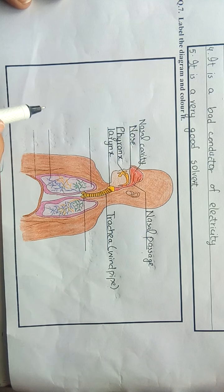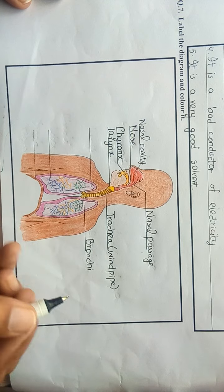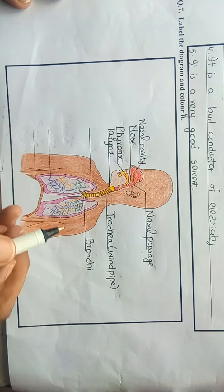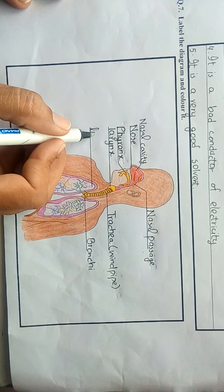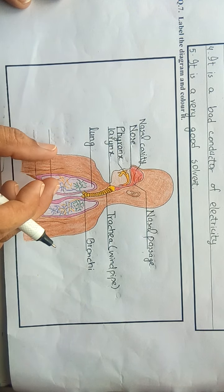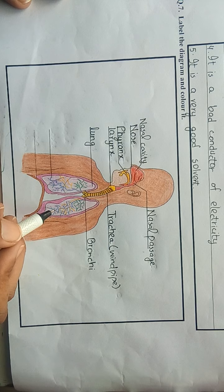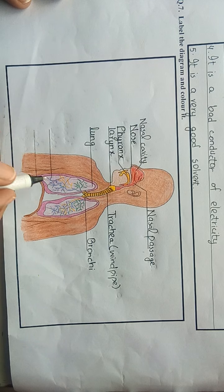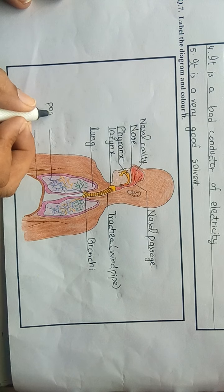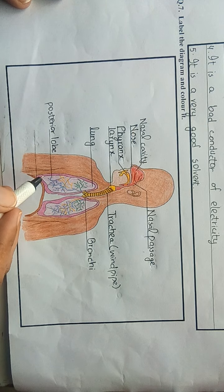This trachea divides into two tubes which are known as bronchi. We have the right lung and the left lung. The right lung is larger compared to the left lung. The right lung has three lobes, including the posterior lobe which is present at the lower portion.